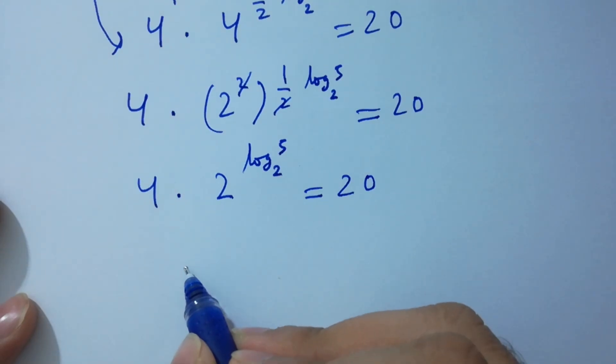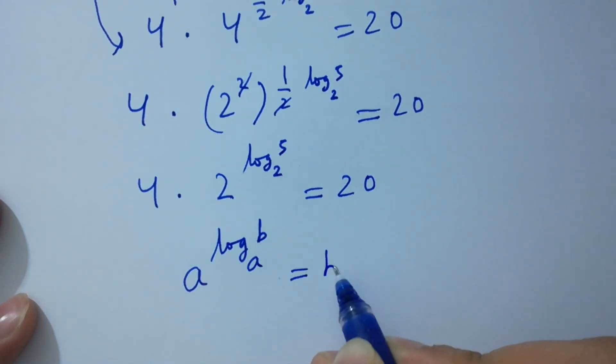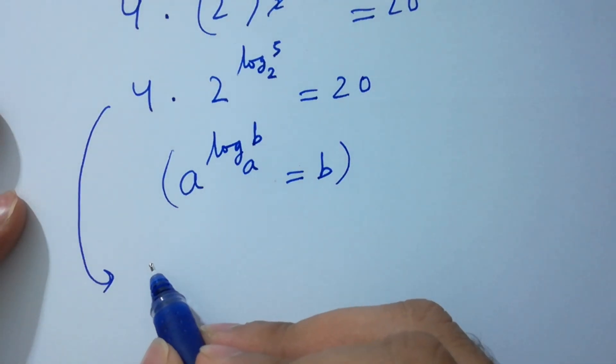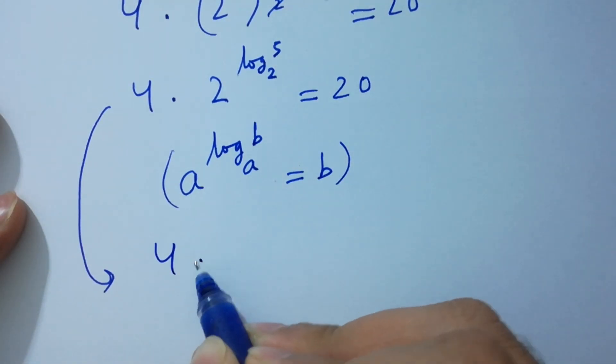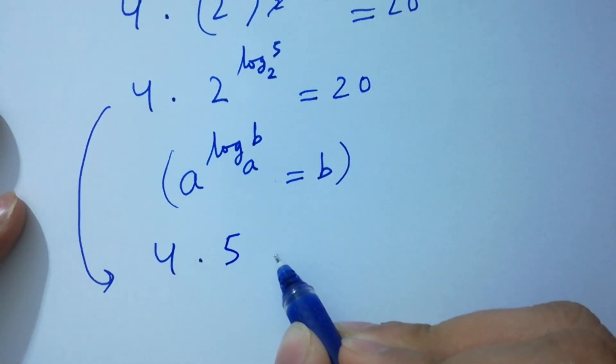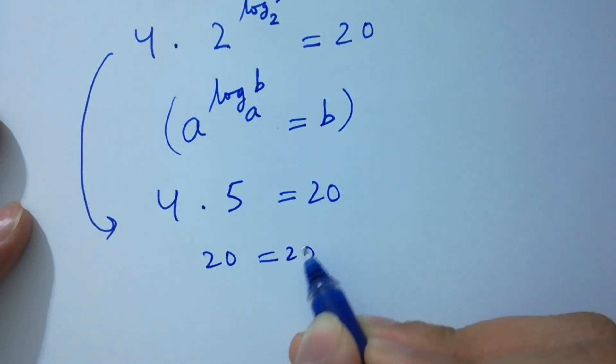As we know, A to the power log B to the base A equals B. We have 4 times 2 to the power log 5 to the base 2 equals 5, which equals 20. 4 times 5 is 20 equals 20.